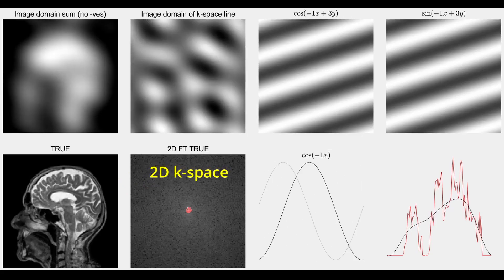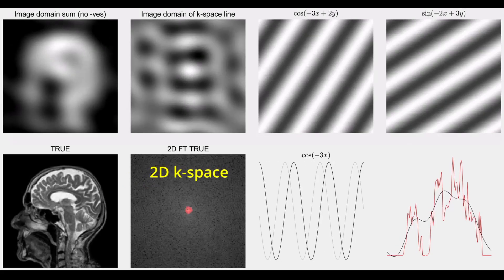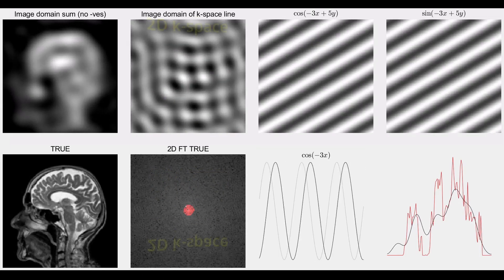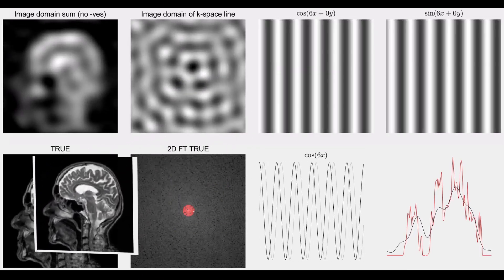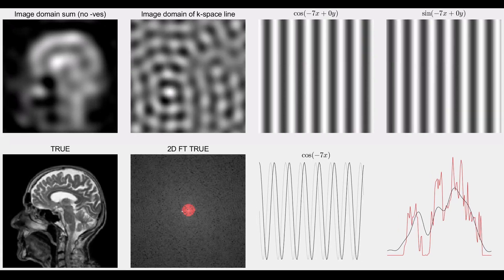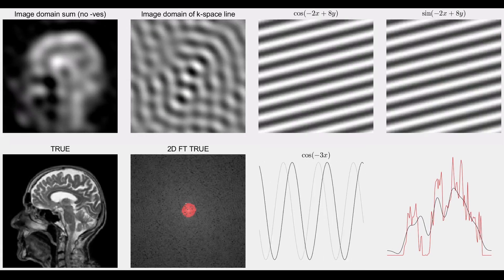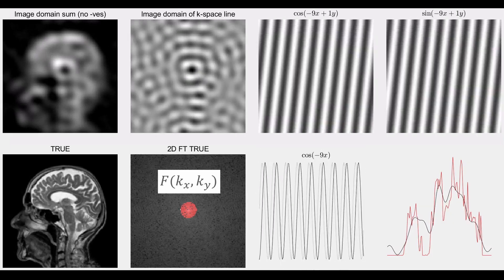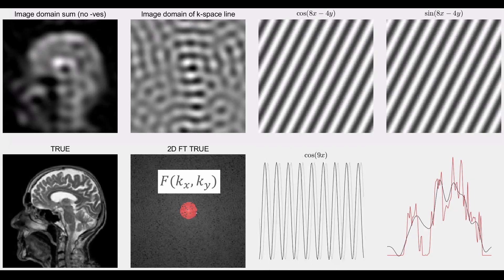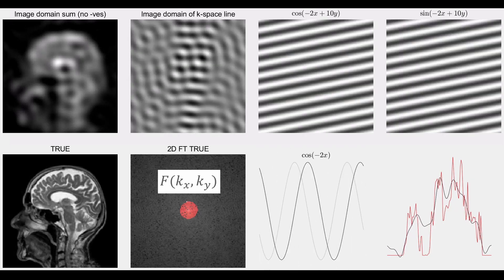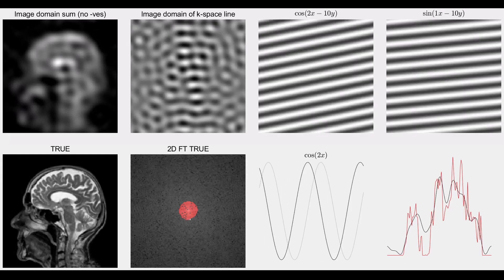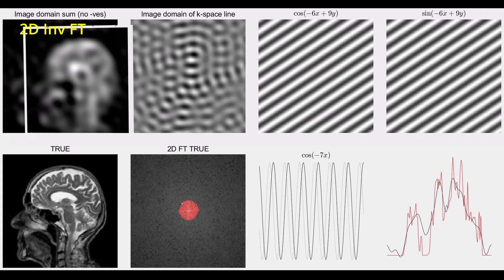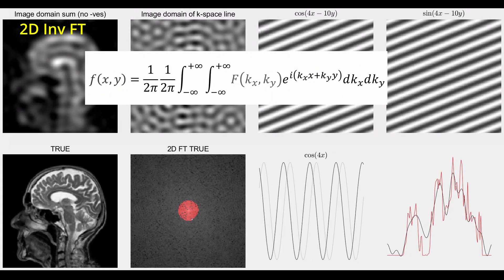In this video, I am showing sampling of 2D K-space for an example of magnetic resonance imaging, MRI. In the bottom left corner, we've got a sagittal MRI image. Just next to it, I've got the 2D Fourier transform of that image. You can see that I've got this growing red circle in the 2D Fourier transform of that image, and that red circle is showing us the current parts of K-space that I am including in the 2D inverse Fourier transform shown in the top left corner of the display.